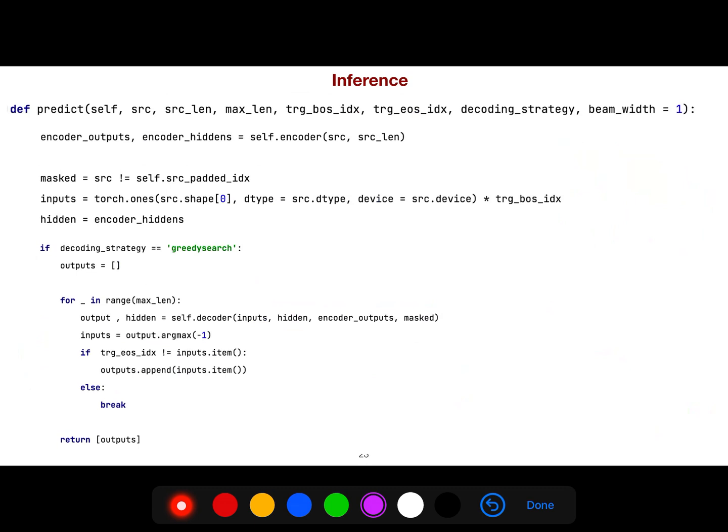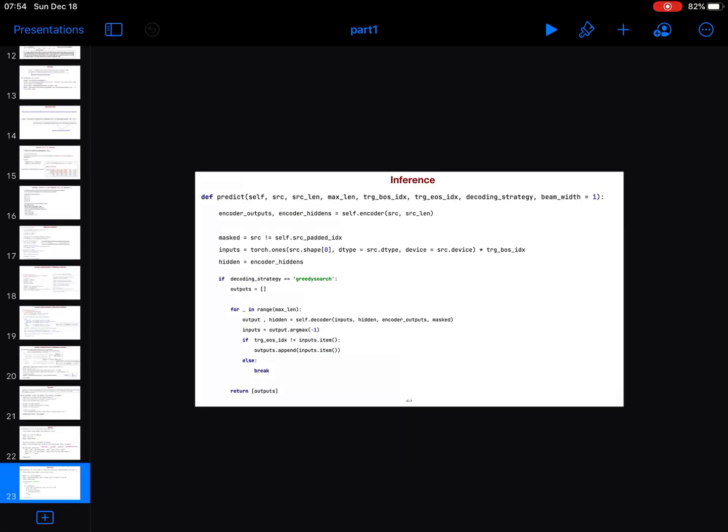So the inference in prediction, we should write a code for that as well, because in inference we assume that the model has learned the weights, so we should predict it. So you can use a simple greedy approach to just take the maximum, a simple top one. And then that's it. You have implemented the machine translation.